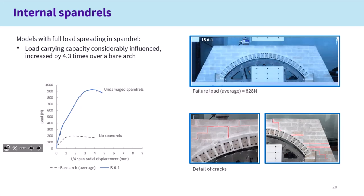This slide presents results from the single-span bridges with spandrels. In terms of mechanism, we observed a hinged mechanism. If you look at the spandrels, they're split into three main sections. The bottom pictures show some of the cracks in the joints just under the load and in the section of the wall far from the load. In terms of capacity, the dotted line is just the response of the bare arch with no spandrels. However, if we add the spandrels, we have an increased capacity of more than four times higher.